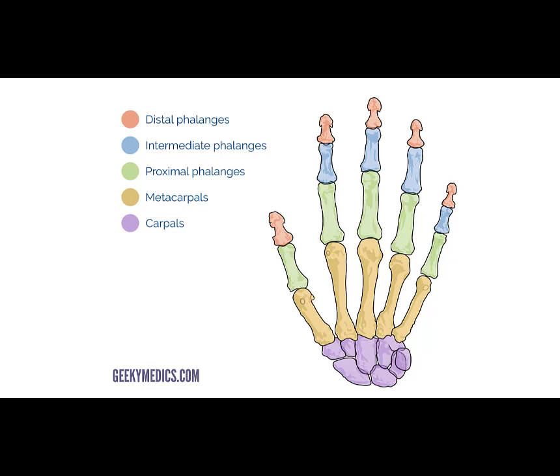There are five metacarpal bones, one for each digit. Distal to the metacarpals, we have the proximal phalanges — one phalange for each finger plus the thumb. There is no intermediate phalange for the thumb, only a distal phalange. But for the other four fingers, we have a proximal phalange, an intermediate phalange, and then a distal phalange.